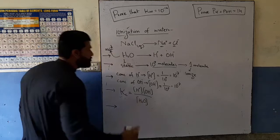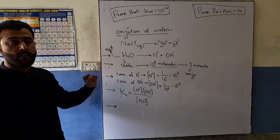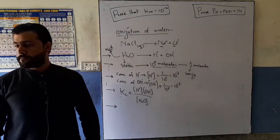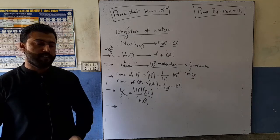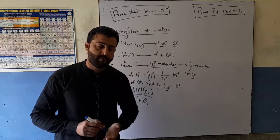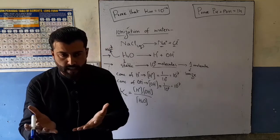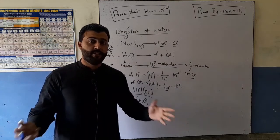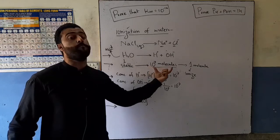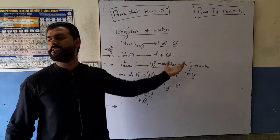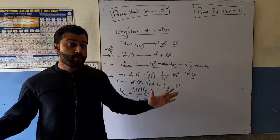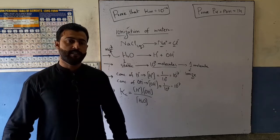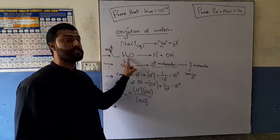Water is very stable — 10 to the power 7 molecules, only 1 crore molecules present. Because only one molecule out of 10^7 ionizes, the change in water concentration is negligible. Since the change is negligible, the water concentration is treated as constant.